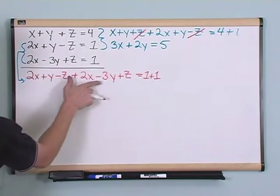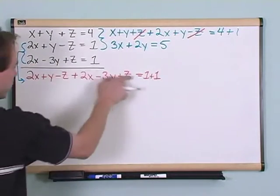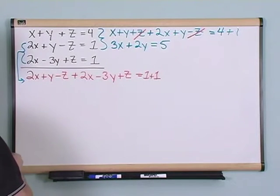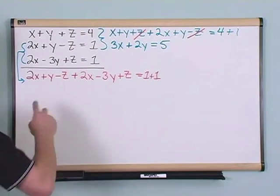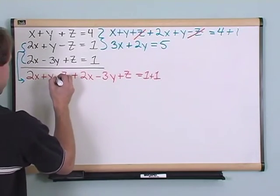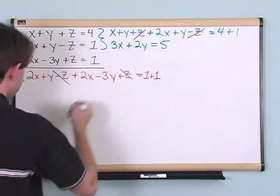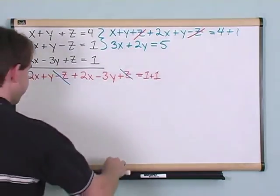And then you add this, 2x minus 3y plus z, equals this. Again, I notice right away that the negative z here cancels with the positive z there. And that's exactly what I was trying to do.